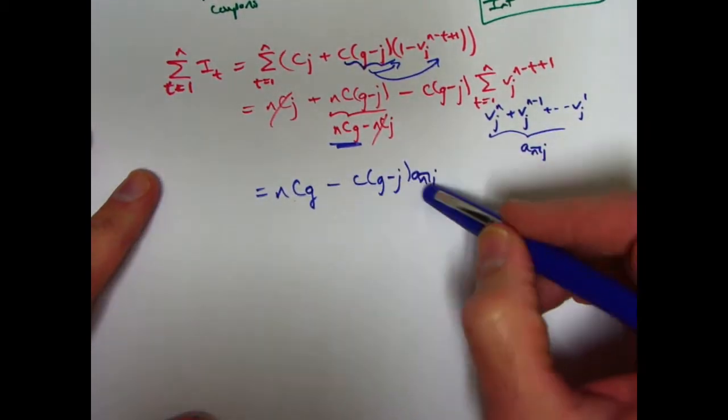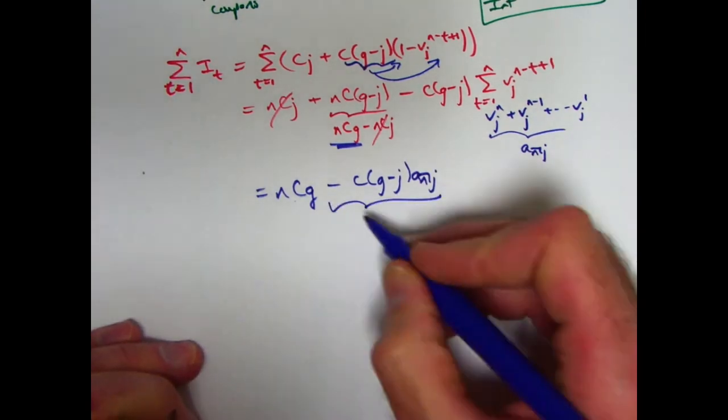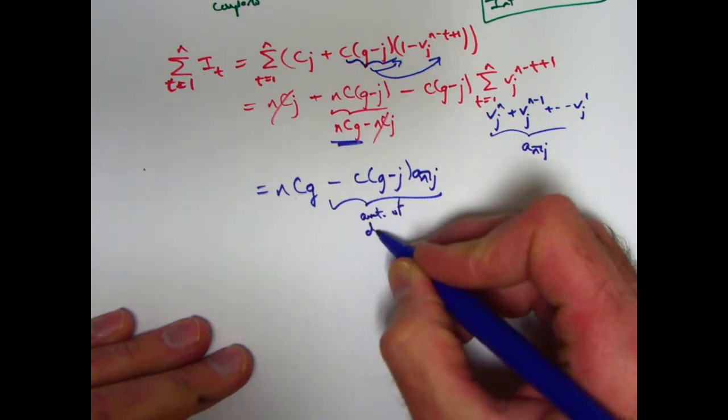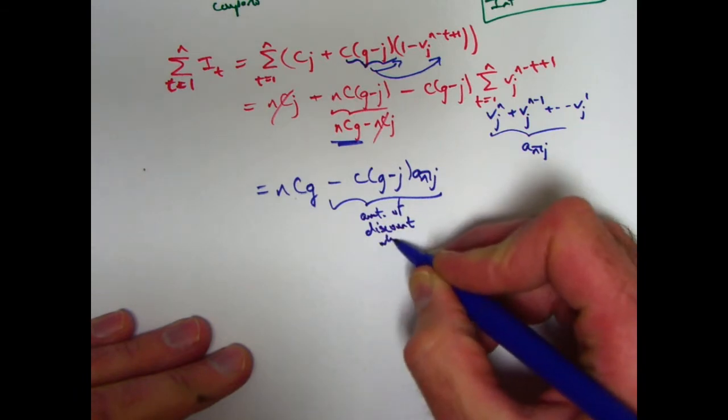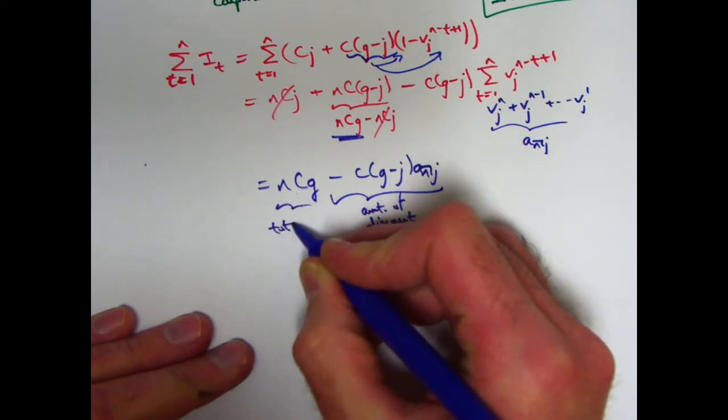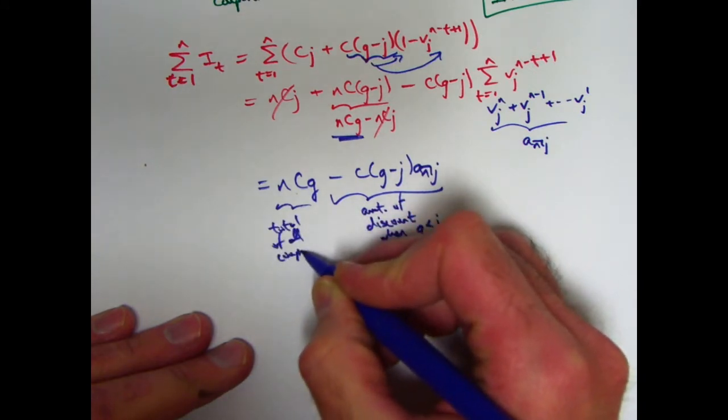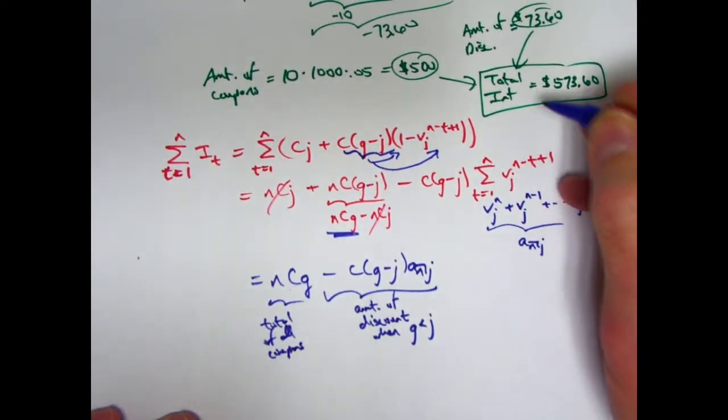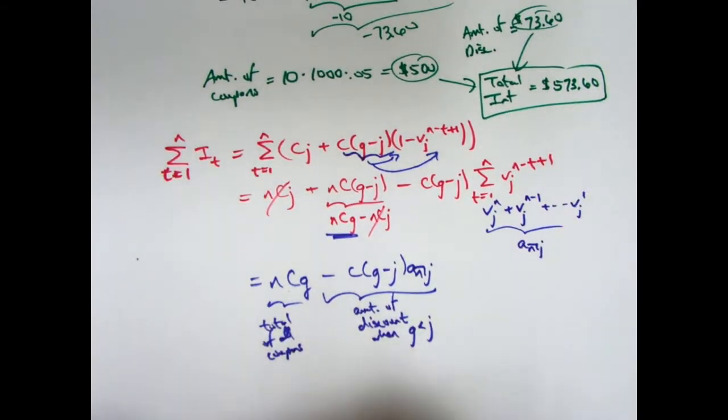Down here, this is still a negative quantity, but I'm subtracting it. So if I include the difference in this, this is really the amount of the discount when G is less than J, which it is here. G is less than J. This is still the total of all the coupons. So you really are taking the total of all the coupons, which was $500 and really adding the amount of the discount, which was the 73.60. This is going to give the same thing, $573.60. That is the right answer. This intuitive approach has been confirmed algebraically.